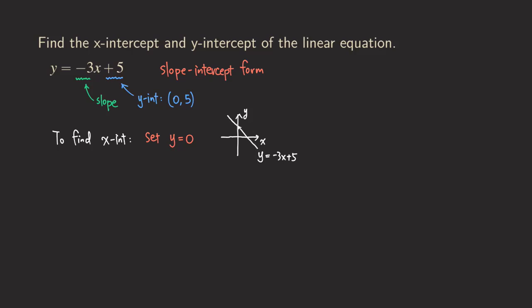And now we already figure out this y-intercept right here, which is what? Which is 0, 5. That's the y-intercept. The x-intercept is this one. And as you can see that the y must be 0 in this case. And now the question is, how do we find the x?